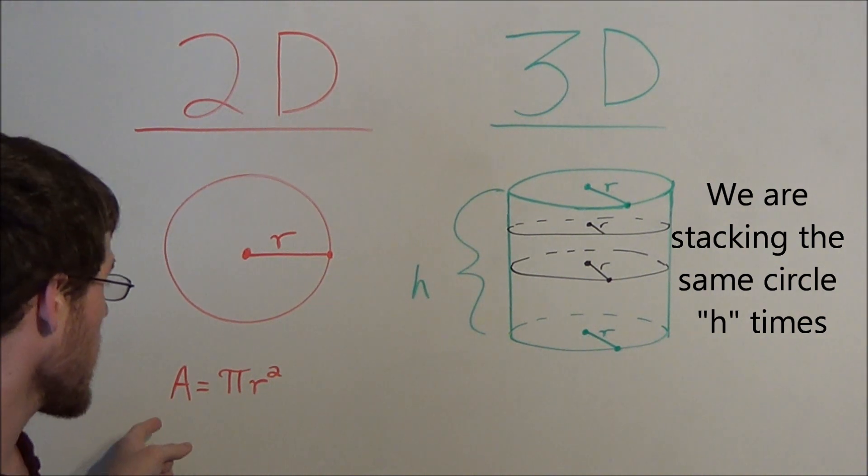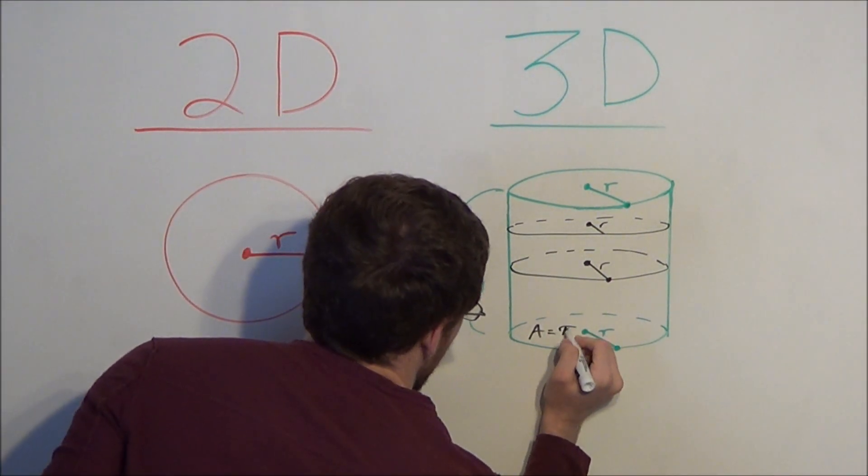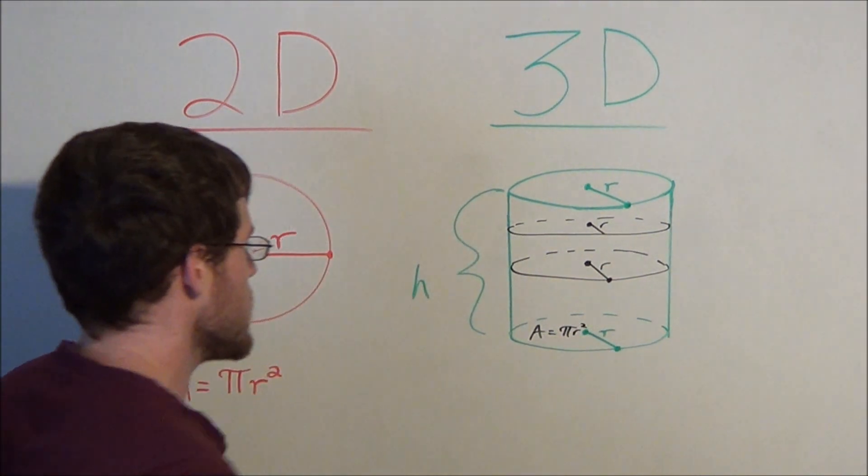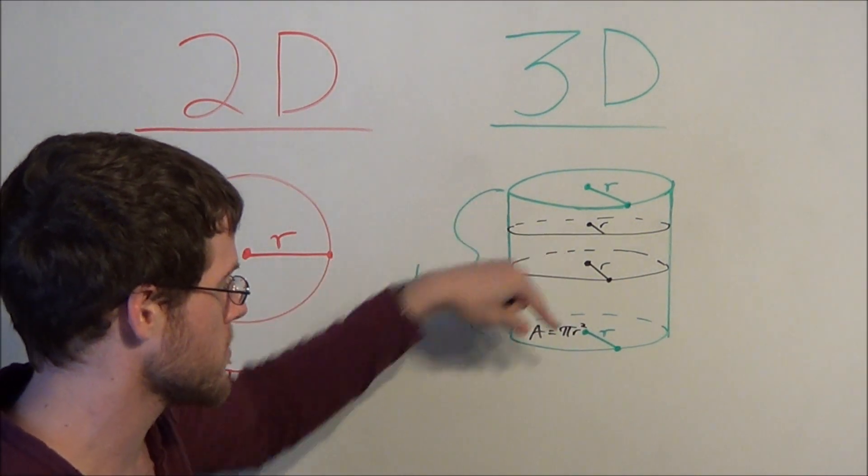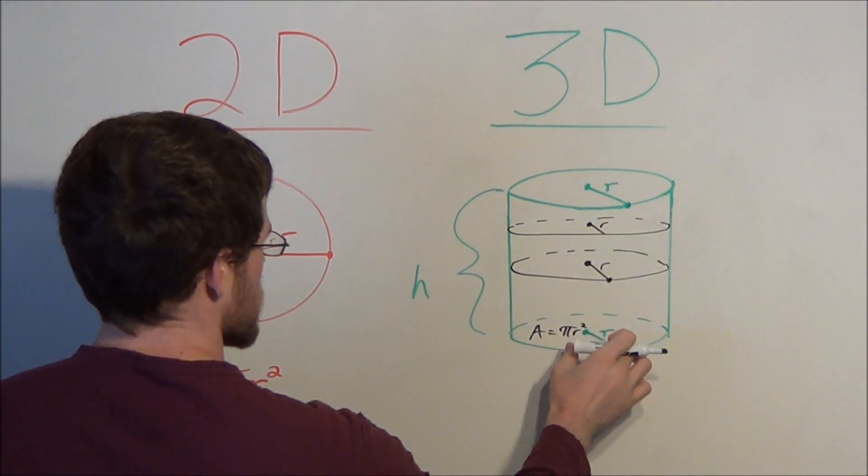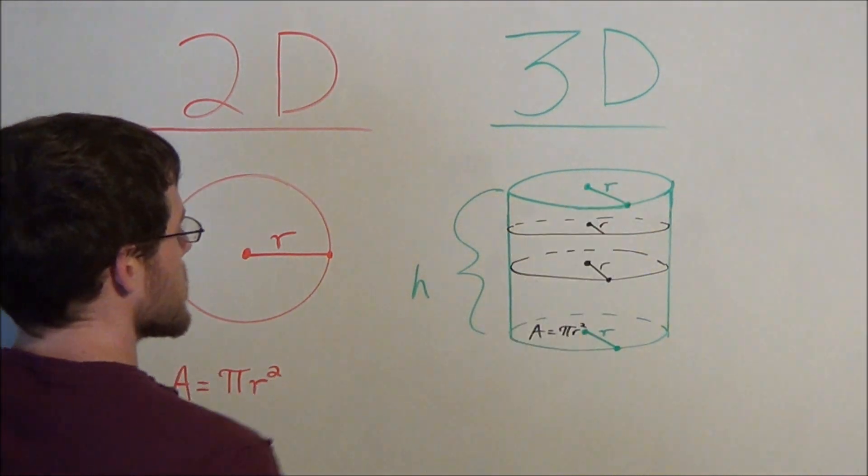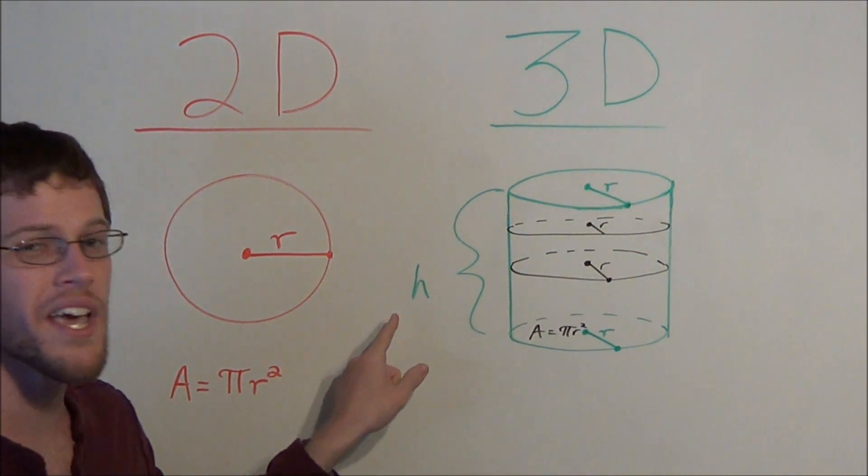If the equation for the area of a circle is pi r squared, then what we're doing is stacking these individual pi r squares. Remember, the surface area of a circle is pi r squared. We're stacking pi r squared, and we're going to keep doing this how many times? We're going to do this h times.